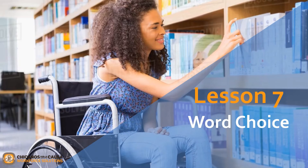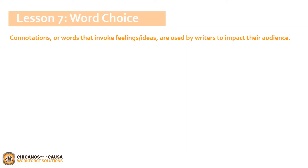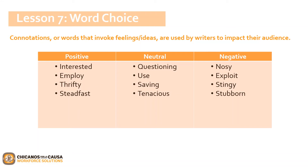All right, everyone, we're almost at the end. We are now on Lesson 7: Word Choice. Writers make careful decisions to select words that will impact their audience. Connotations — words that invoke feelings or ideas — are used by writers to impact their audience. On this slide, you will see examples in their various connotations. Let's look at the very first line across the table. Under positive, we have the word 'interested.' A neutral connotation of this word would be 'questioning,' while a negative connotation of the same word would be 'nosy.' Even though they all have similar meanings, they definitely express different feelings and thoughts within not only the reader, but the writer itself.